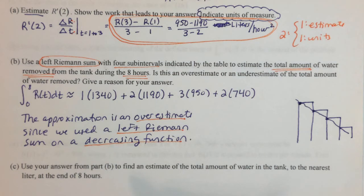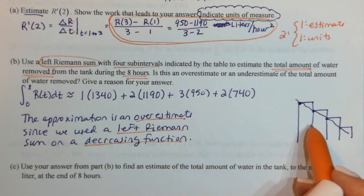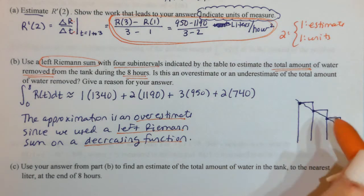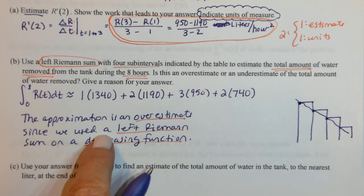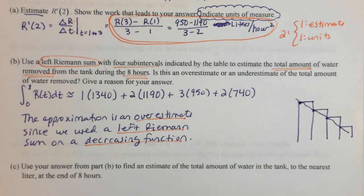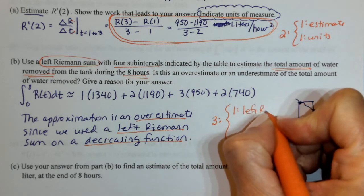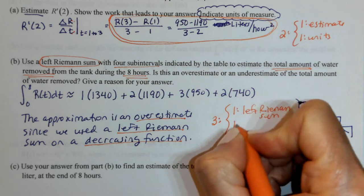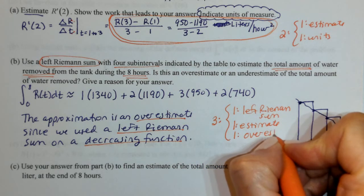Three key things to say: your answer (overestimate), left Riemann sum, and decreasing function. Do not get too wordy — don't write a paragraph or reference a picture in your answer. You can draw the picture just for yourself. This part was worth three points: one for the left Riemann sum, one for the estimate, and one for the overestimate with reason.